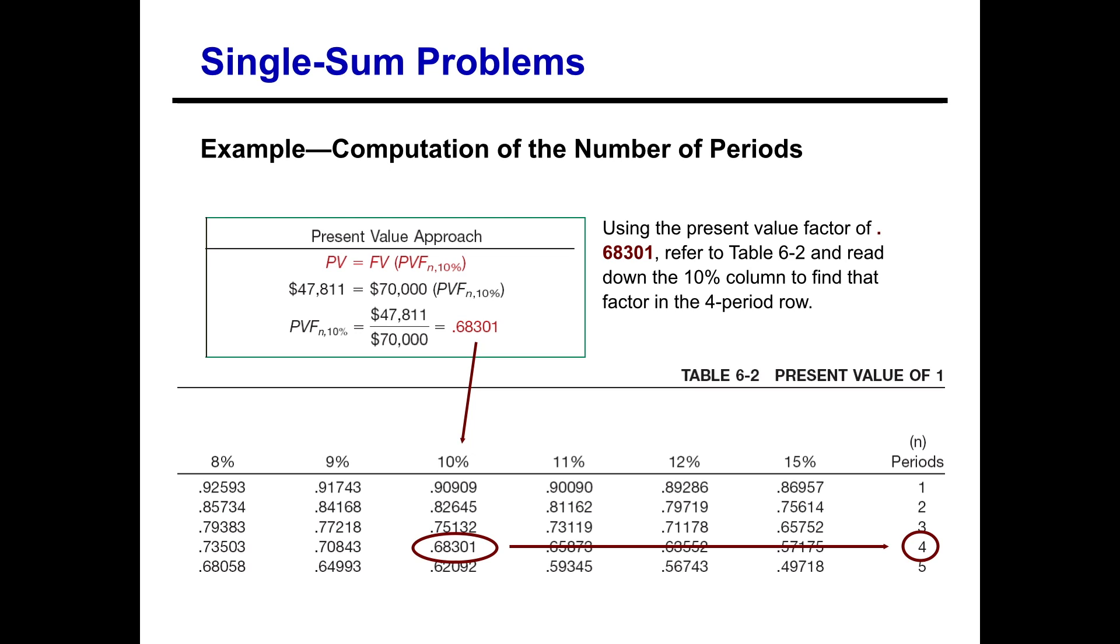0.68301 happens to be again at the four periods. So no matter which method or approach you use, the present value approach or the future value approach, you should still get the same answer. In this case, it's four periods.